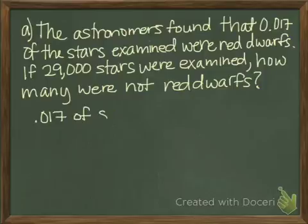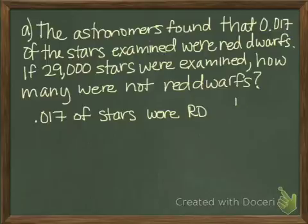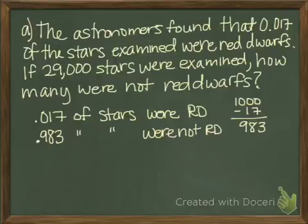We'll start this off: 0.017 of the stars were red dwarfs, but the problem is asking for how many were not. So we need to subtract 17 from 1000, and we get 983. So 0.983 of the stars were not red dwarfs.